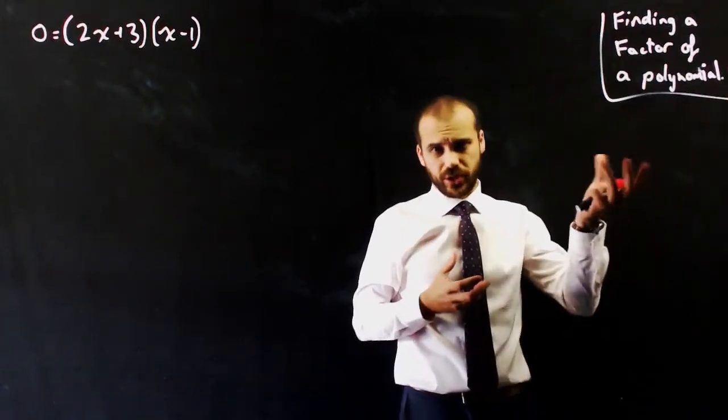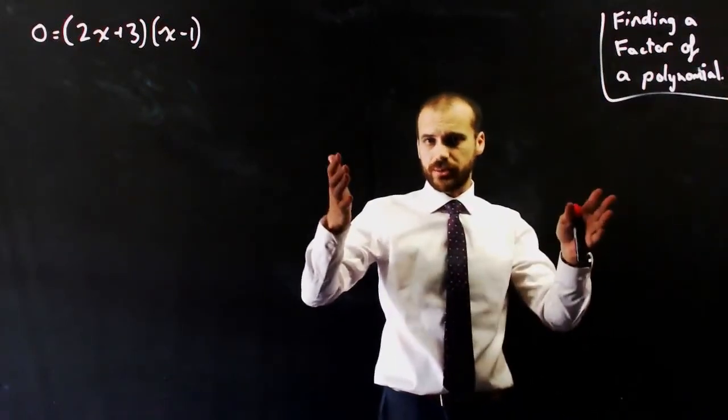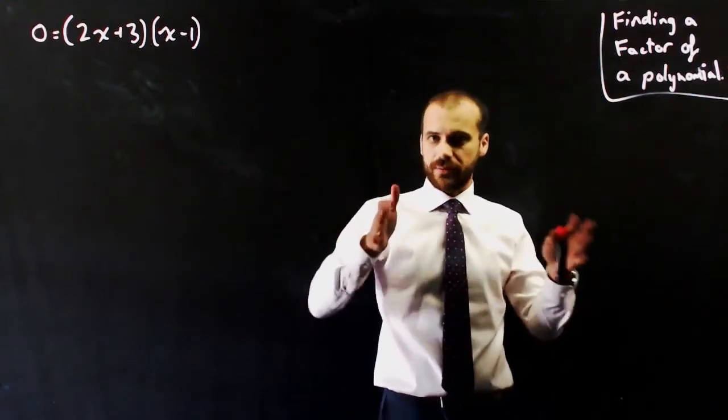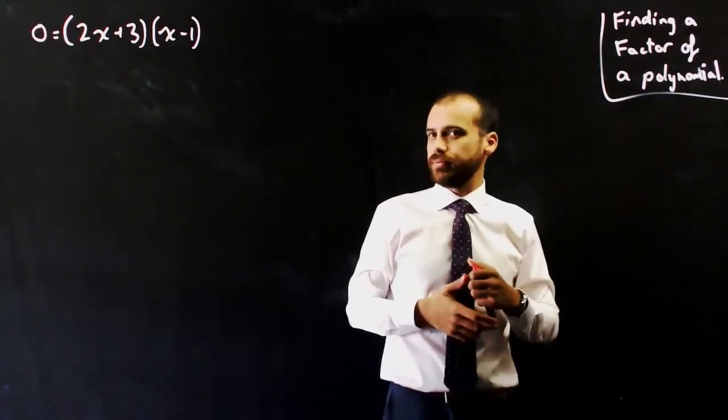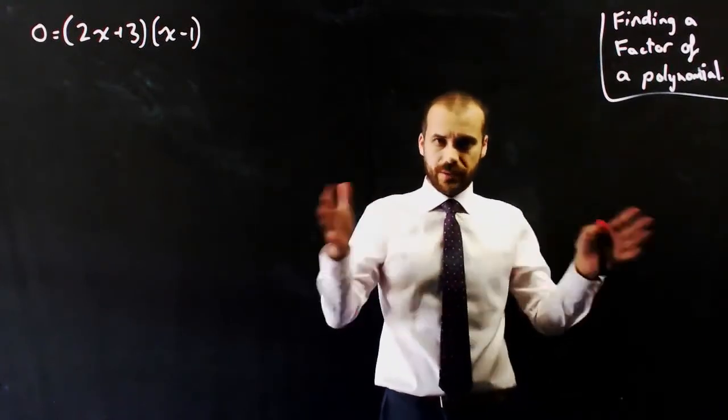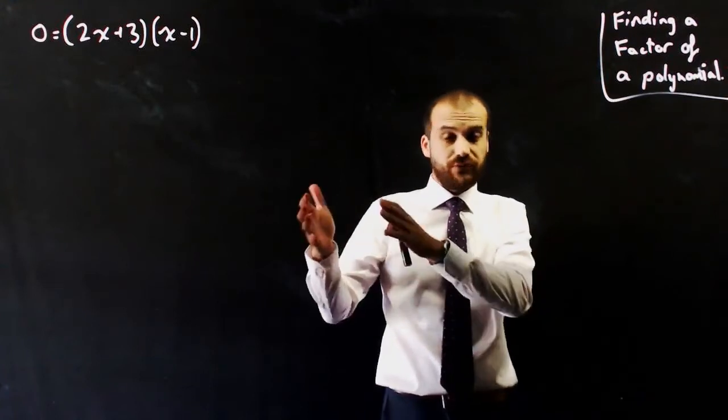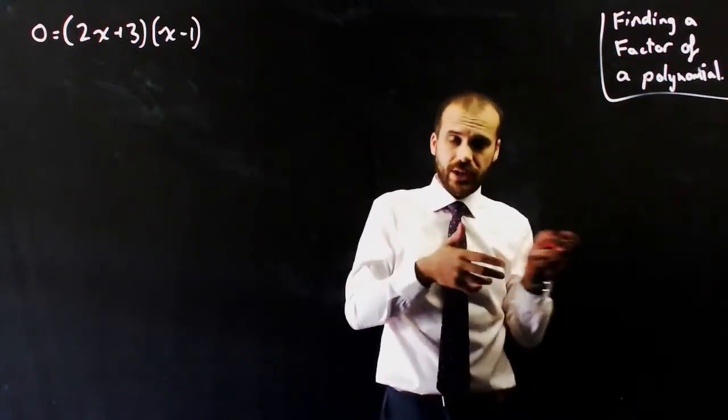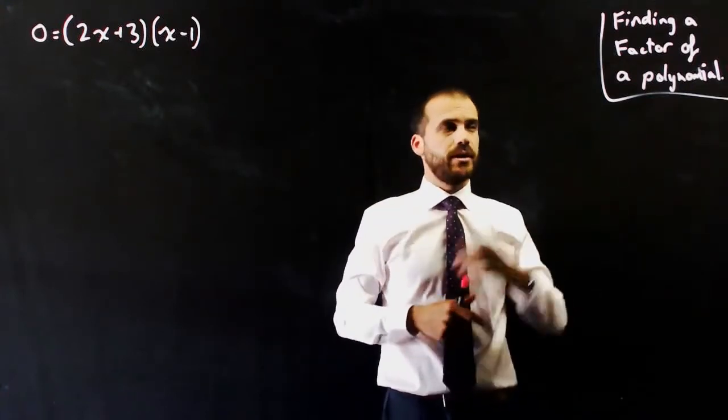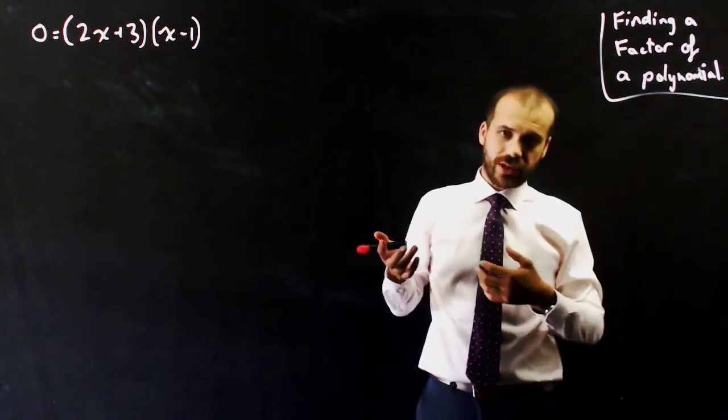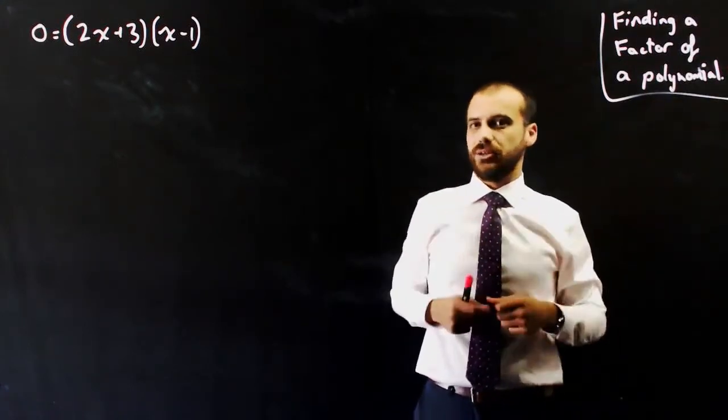So we've already looked at division of polynomials. You've got a big long polynomial and you use long division with a factor of that polynomial. Now, the problem is that if you want to factorize that big long polynomial, you need a first factor to divide it by. If you don't have that first factor, you've got nothing to divide it by, so you're going to really struggle to factorize it. Now we need to do a little bit of guess and check here to find that factor, but we do have something handy to help us.